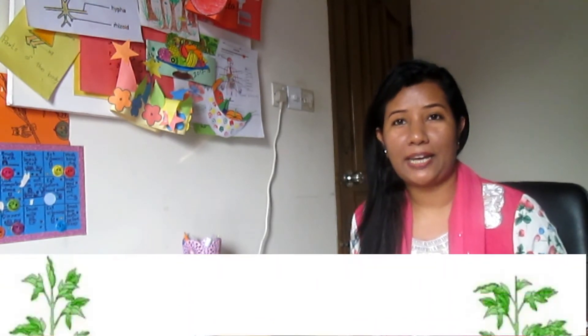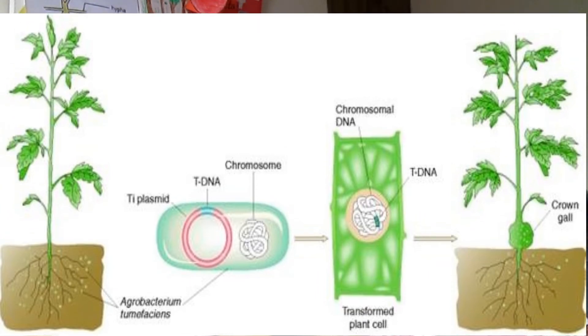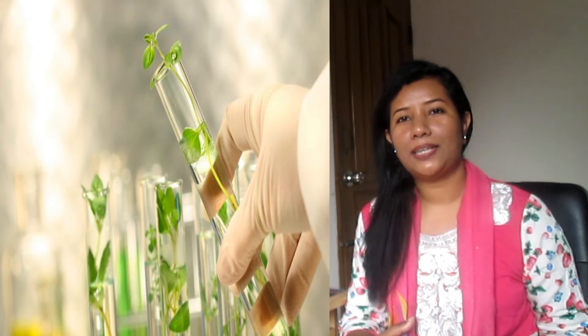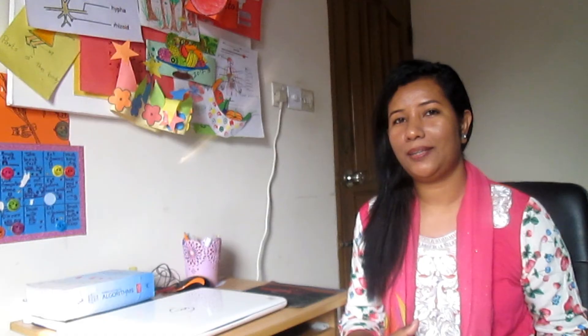In parts of the world where many genetically modified crops are grown, there is a danger of losing traditional varieties with their desirable background genes suited for particular locations, and their possibly unknown traits that might be useful in a world where the climate is changing. This requires a program of growing and harvesting traditional varieties and setting up a seed bank to preserve them.